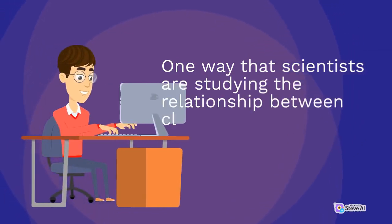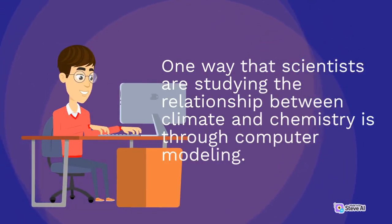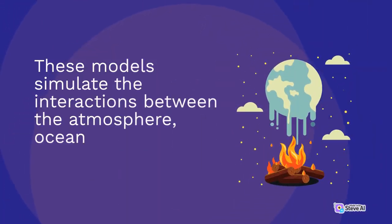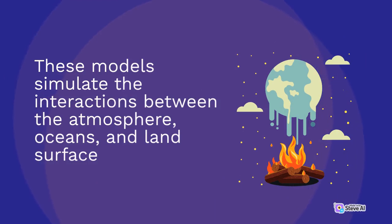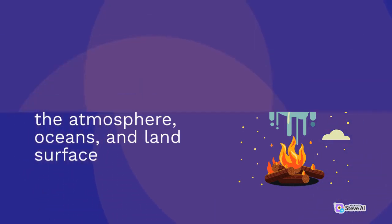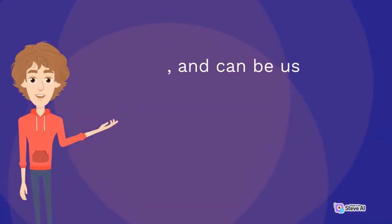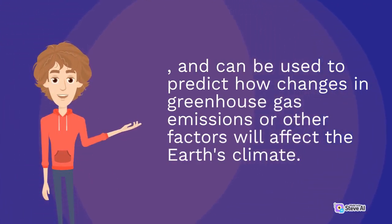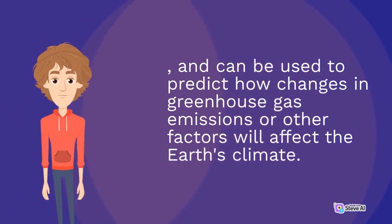One way that scientists are studying the relationship between climate and chemistry is through computer modeling. These models simulate the interactions between the atmosphere, oceans, and land surface, and can be used to predict how changes in greenhouse gas emissions or other factors will affect the earth's climate.